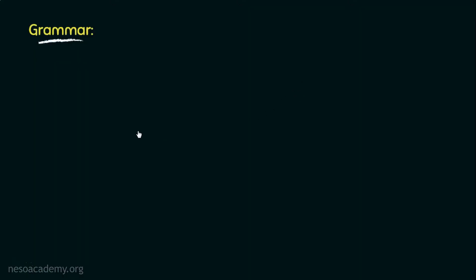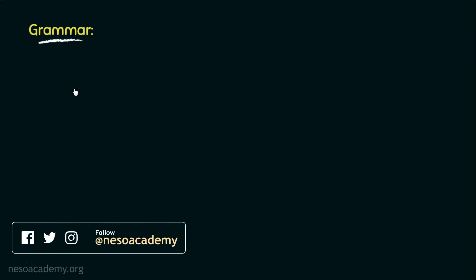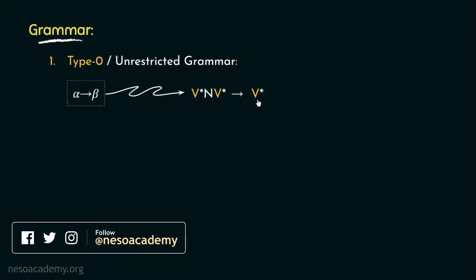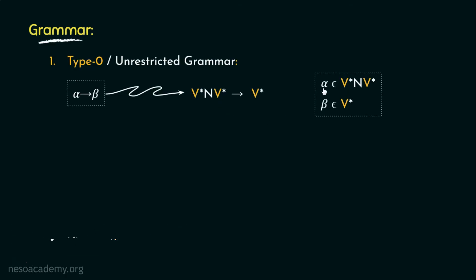Before getting to the remaining categories of formal grammars, let's quickly revisit the previously observed types. The first category was the type 0 or unrestricted grammars. The form of the production rule alpha → beta was specified such that the left hand side alpha belongs to V*NV* and the right hand side beta belongs to V*. V* represents any string over N union T, giving it the liberty of generating epsilon, only non-terminals, only terminals, or a sentential form. Without a non-terminal, the generation process cannot progress, which is why the non-terminal N is placed between two V*s.